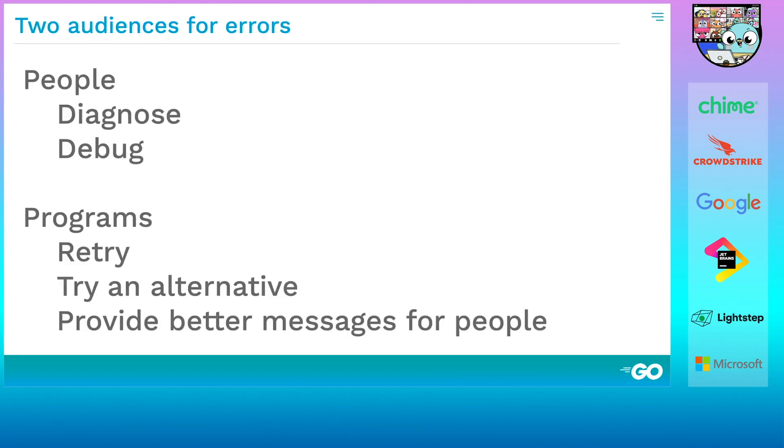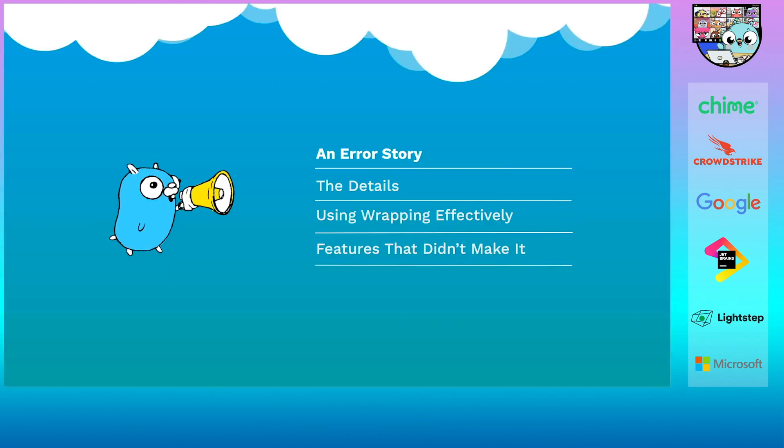To understand why error wrapping is useful, it's helpful to keep in mind that errors have two audiences, people and programs. People use errors to diagnose and debug problems. Programs act on errors in a variety of ways. Depending on the nature of the error, a program might retry an operation or try an alternative action. Or if it can't proceed, it might at least try to help people understand the error better by adding information to it. Error wrapping helps programs by giving them more information to use for their decisions.